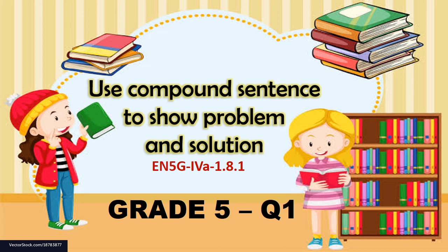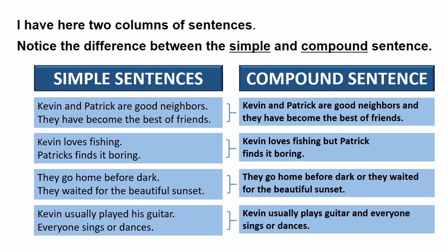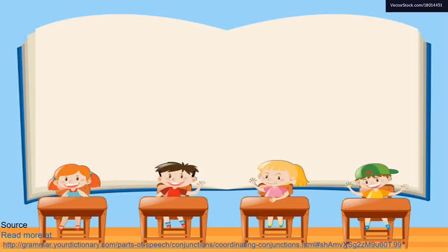In this lesson, we are to use compound sentences to show problem and solution. I have here two columns of sentences. Notice the difference between the simple and compound sentence. As you can see from our given examples, we need two simple sentences to form one compound sentence. We used words like 'and,' 'but,' and 'or' to connect the two simple sentences together.